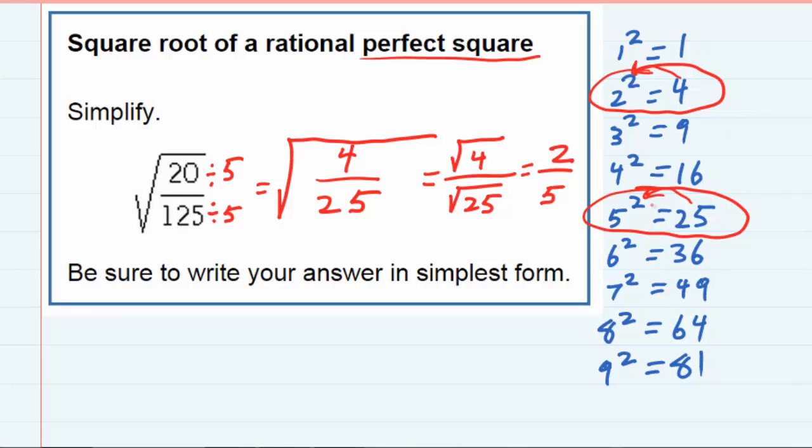So remembering these perfect squares that I had listed over here on the right-hand side is really the key, because for each one of them I can go backwards by saying the square root of the one on the right-hand side is the number on the left. So the square root of 49 is 7.